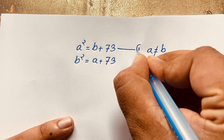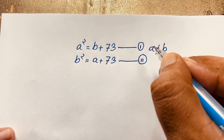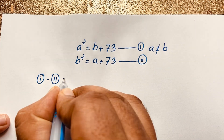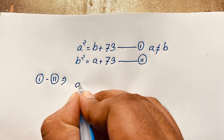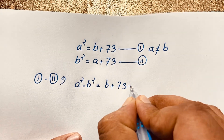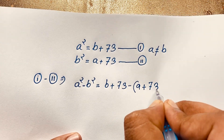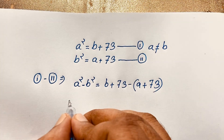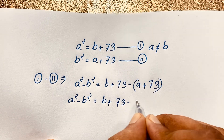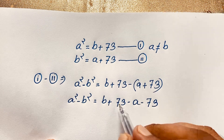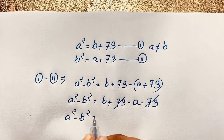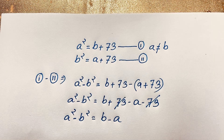This is our first equation and this is our second equation. First, I subtract the first equation from the second equation. It will be a squared minus b squared is equal to b plus 73 minus (a plus 73). The 73s cancel out, giving us a squared minus b squared is equal to b minus a.